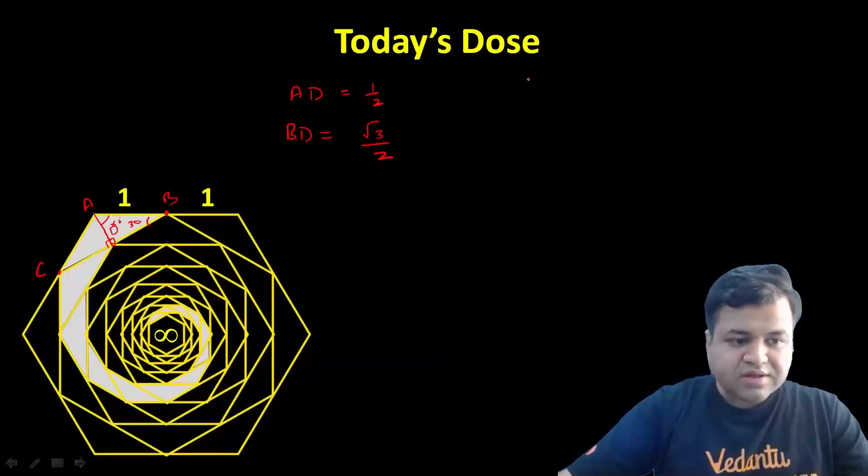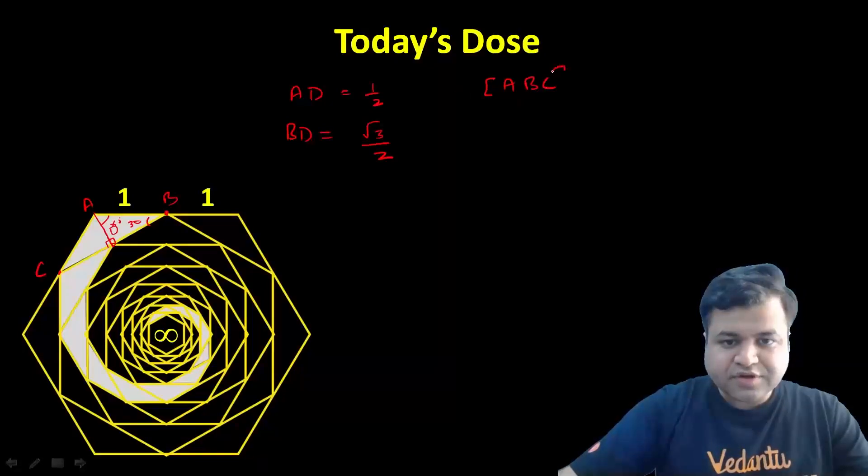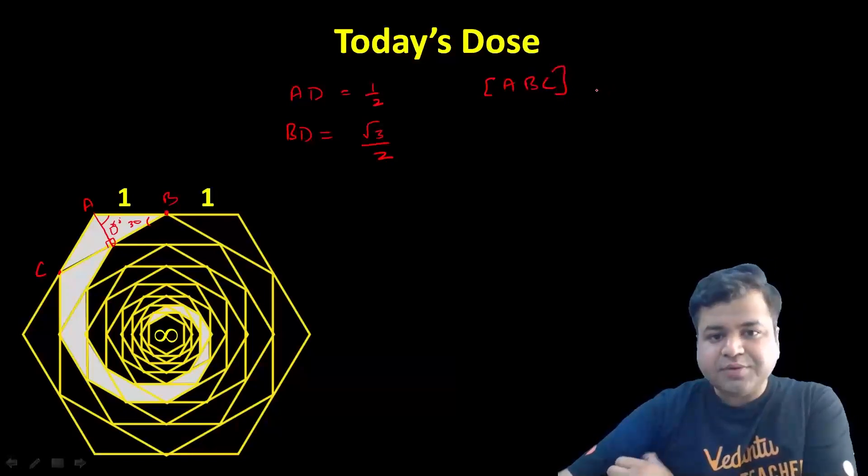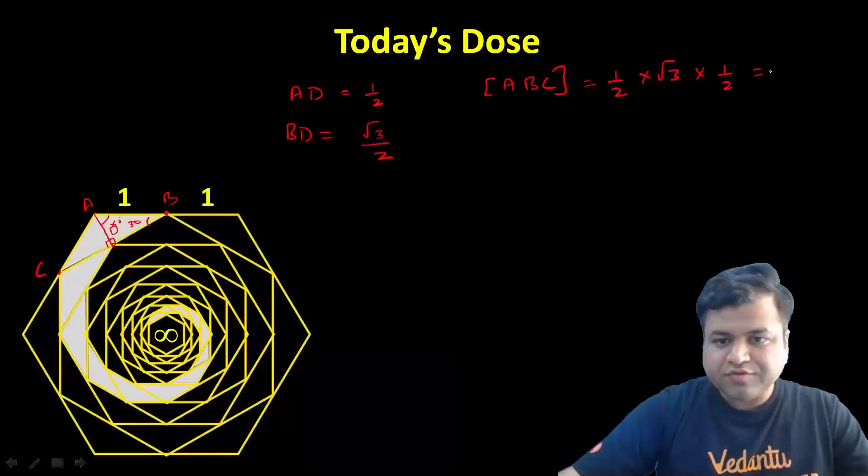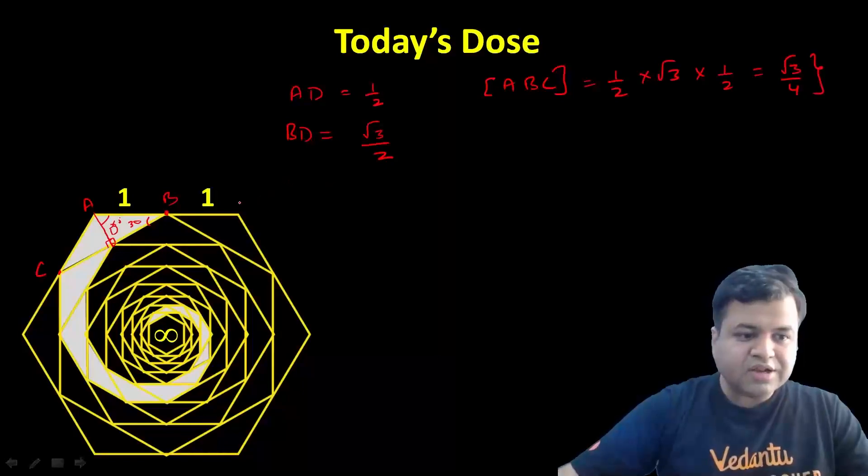The area of triangle ABC, the first triangle of the shaded portion, should be half of root 3 (which is twice BD) times the height, which is again half. This gives us root 3 by 4 as the area of triangle ABC.